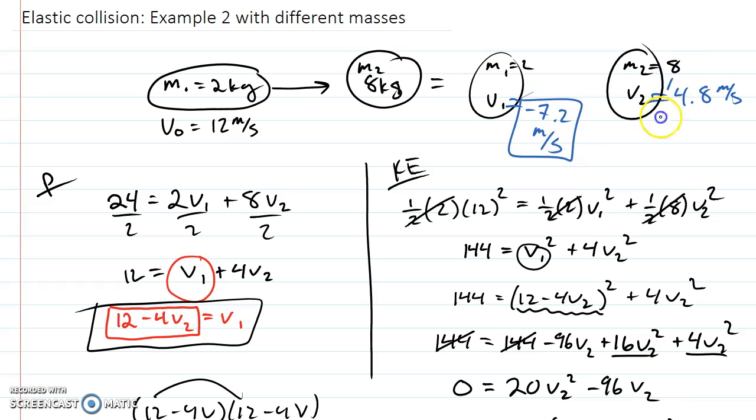All right, so negative 7.2. Now, what does that mean? That means that the larger object was pushed forward and it now has a velocity of 4.8. But the first object, because it's so much lighter, is actually bouncing off the object and coming back with a speed of 7.2 meters per second. So when they bounced, they actually separated and bounced in opposite directions.